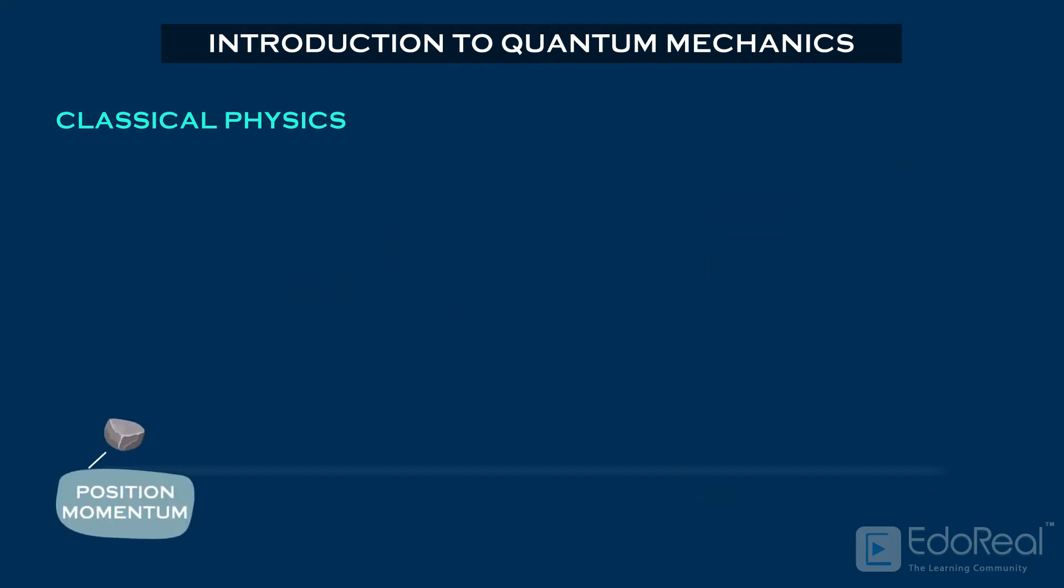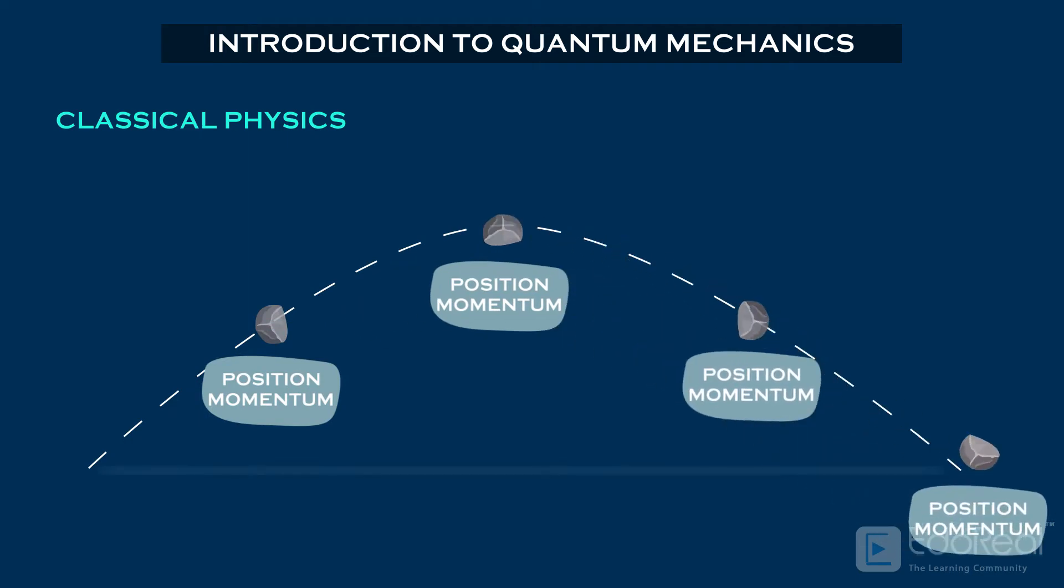For example, if a stone is thrown into the air, we can simultaneously determine the position and momentum of that stone along the projectile using Newton's laws of motion. We are able to determine this because the stone follows just one path. It seems simple, and the human mind has no problems with it.